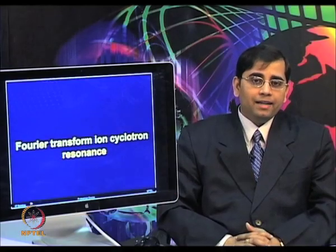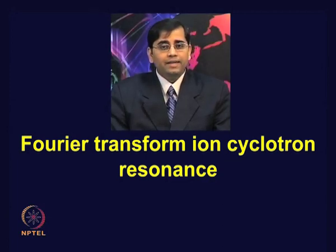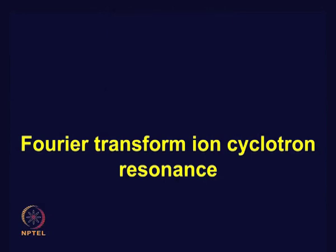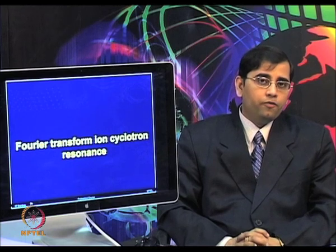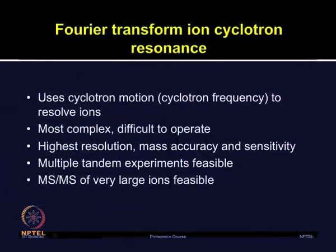One important mass analyzer is Fourier transform ion cyclotron resonance, or FTICR. Due to its high resolution and MS/MS capabilities, FTICR MS in combination with electrospray ionization has been employed for large biomolecules and is also used in proteomics. An FTICR MS can be considered as an ion trap system where ions are trapped in a magnetic field. It uses cyclotron motion or cyclotron frequency to resolve the ions. Although operationally it is very complex and not easy to operate, it provides the highest resolution, mass accuracy, and sensitivity. It also provides capability for multiple tandem experiments, and MS/MS of very large ions is possible.